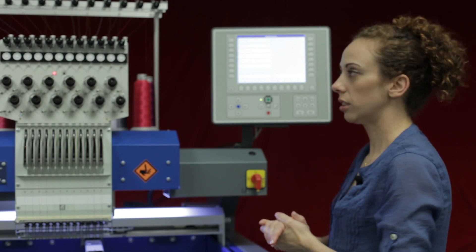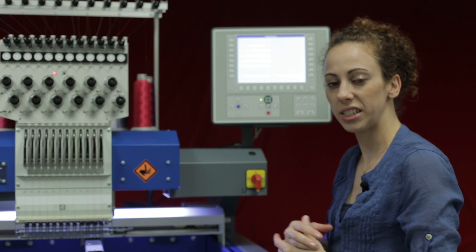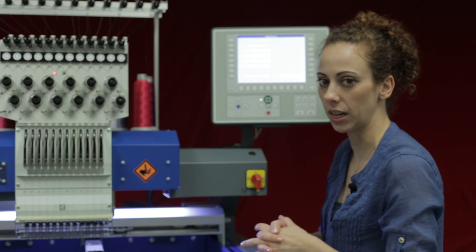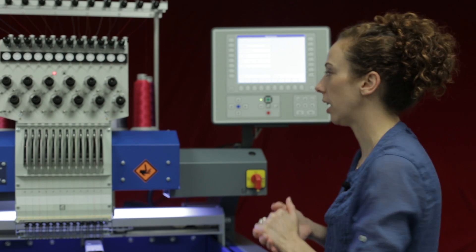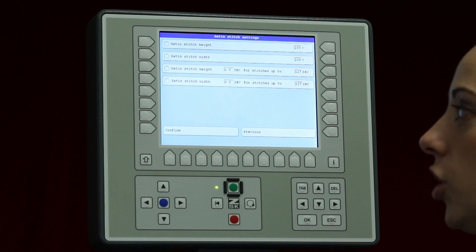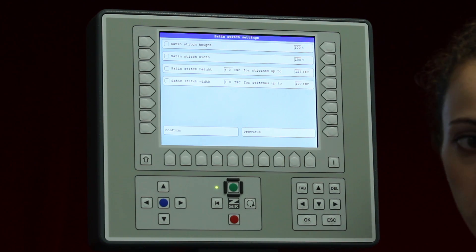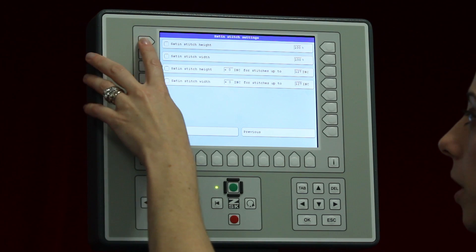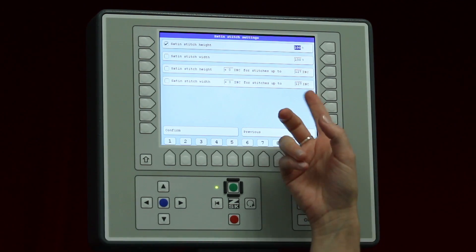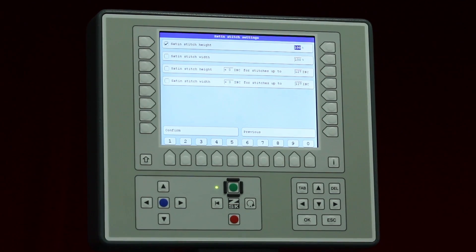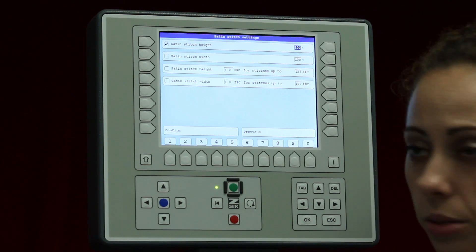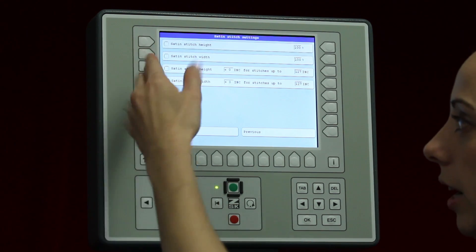The next function is the satin stitch. This is according to the satin stitches that you do have in the design. The T8 will detect that and if I click on satin stitch I can do the overall satin stitch height and width by percentage just by clicking that. Again it will go ahead and highlight my number. I can type in the new number should I need to increase it or decrease it. I'll go ahead and deselect that and turn that off.